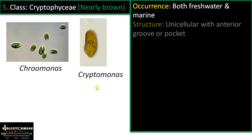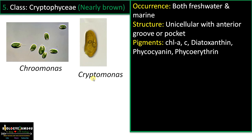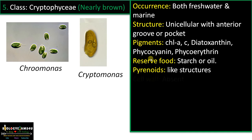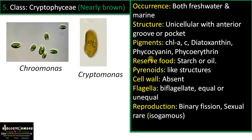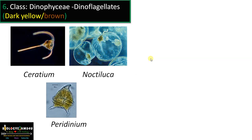Class 5 is Cryptophyceae, often called nearly brown algae. They occur in both freshwater and marine environments. Structure is unicellular with an anterior groove or pocket. Pigments include chlorophyll A and C, diatoxanthin, phycocyanin (bluish pigment), and phycoerythrin (red pigment). Reserve food is starch or oil. Pyrenoid-like structures are present. Cell wall is absent. Flagella: biflagellate, equal or unequal. Reproduction by binary fission; sexual reproduction is very rare, if present may be isogamous. Examples include Cryptomonas.